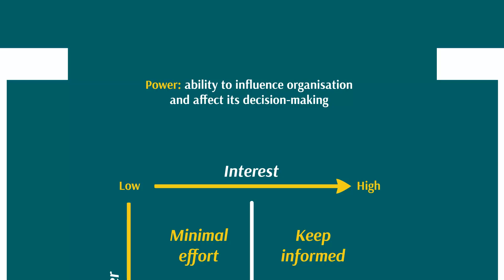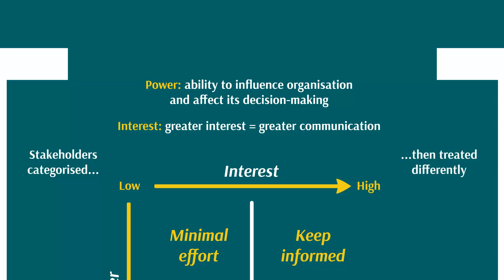The other criteria on Mendelow's Matrix is interest — how much interest the stakeholder has in the organization. If they've got a lot of interest, the organization will need to increase its level of communication with them. Most employees will have little power but a lot of interest in the business, because they care about their paycheck and want the business to perform well so they have a stable job. It's important the organization communicates its plans to employees so it can retain their loyalty and motivation.